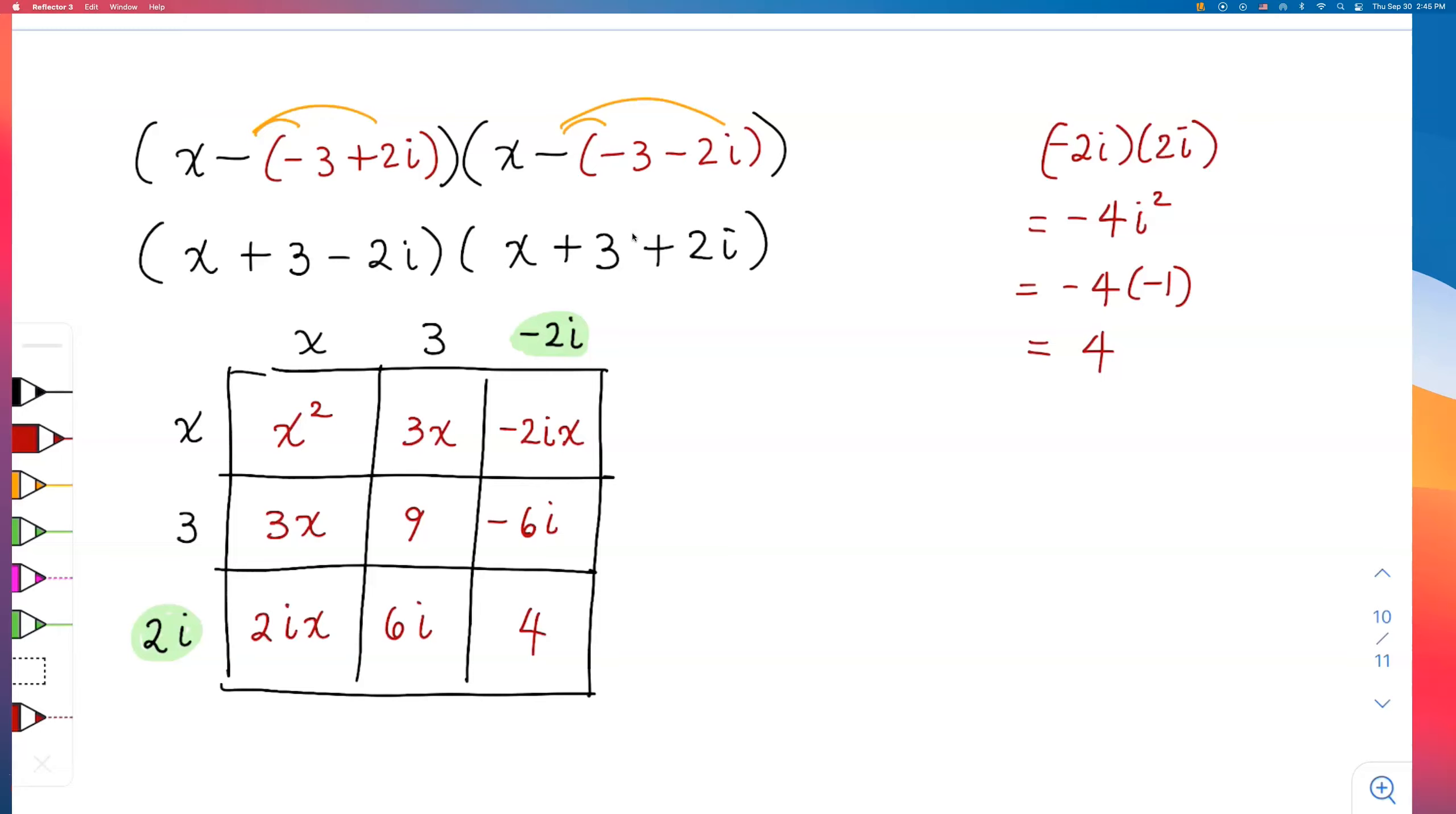Remember, i² is -1. Alright, we're ready to combine some like terms now. And we'll also cancel out the opposite. So -2ix cancels out with positive 2ix. 6i cancels out with -6i. And we have these like terms: I have 3x and 3x, and I have 9 + 4. So if I multiply them out—or I'll add them out—I will get x² + 6x + 13.